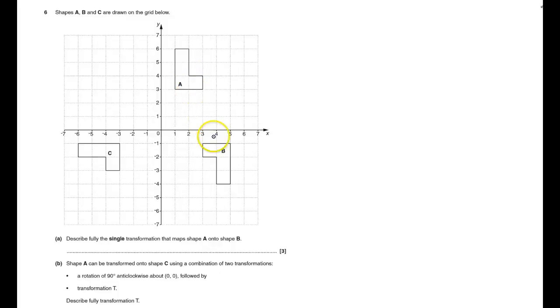From A to B, it's turned around, so it's a rotation. Using tracing paper, you'll see it's a rotation of 180 degrees. The center of rotation is (3, 1). I've got three bits to it and there's three marks, so that's looking good.